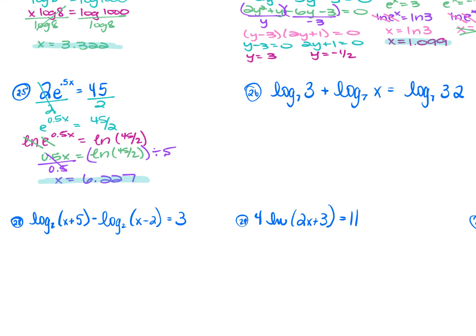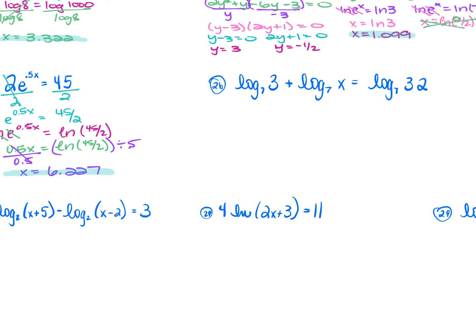For number 26: log₇(3) + log₇(x) = log₇(32). Addition means multiplication, so rewrite as log₇(3x) = log₇(32). Both sides have the same base 7, so the logs cancel: 3x = 32. Divide by 3: x = 32/3.